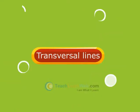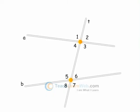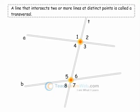Transversal Lines. A line that intersects two or more lines at distinct points is called a transversal.